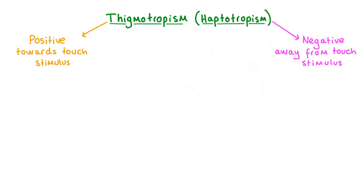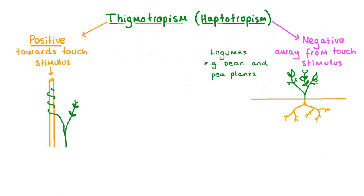Thigmatropisms, like most tropisms, can be negative or positive — growing away from or towards a stimulus. In the climbing plant example, the tendrils contacting an external solid object stimulates them to grow towards it, which is called positive thigmatropism. In certain plants like legumes, which include bean and pea plants, the roots rely on their sense of touch to help them grow into the soil without encountering much resistance. When the roots come into contact with solid objects underground like rocks or stones, they are stimulated to grow away from them — this is called negative thigmatropism.